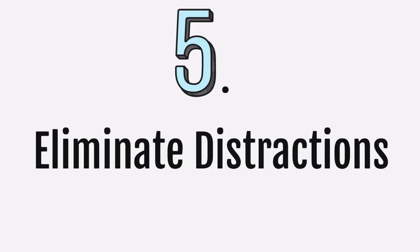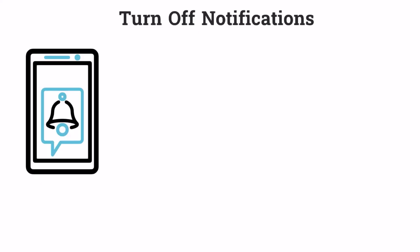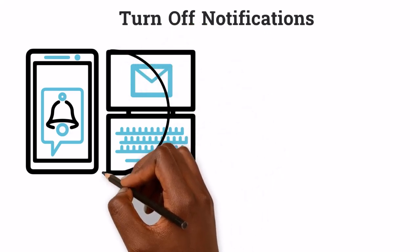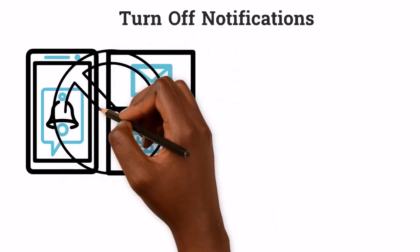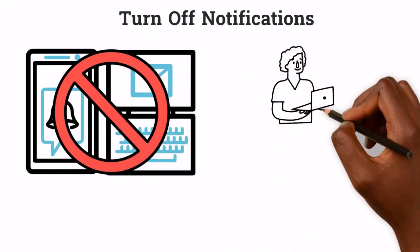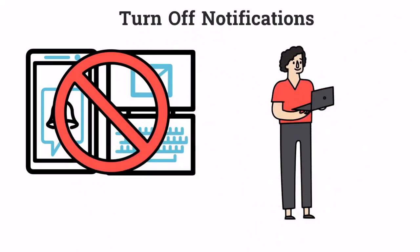Last but not least, learning online can make it easier to be distracted. One way to reduce distractions is to turn off all notifications on your phone and laptop when watching lectures or studying to ensure you're not easily distracted. Attend lectures in a quiet space so you can fully concentrate on understanding the course material.